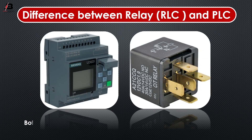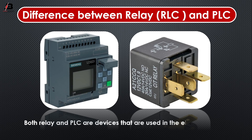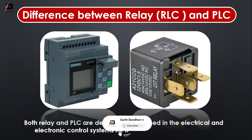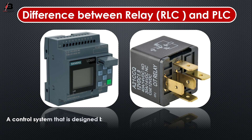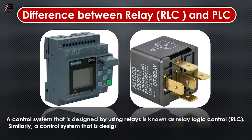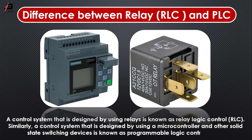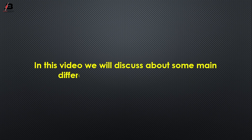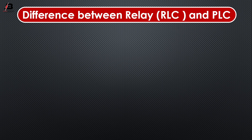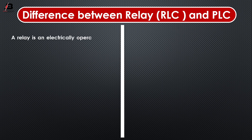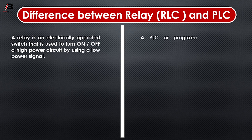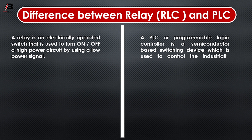Difference between Relay, RLC, and PLC. Both relay and PLC are devices that are used in the electrical and electronic control system for the automation of process. A control system that is designed by using relays is known as Relay Logic Control, RLC. Similarly, a control system that is designed by using a microcontroller and other solid state switching devices is known as Programmable Logic Controller, PLC. A relay is an electrically operated switch that is used to turn on or off a high-powered circuit by using a low-powered signal. A PLC or Programmable Logic Controller is a semiconductor-based switching device which is used to control industrial processes automatically.